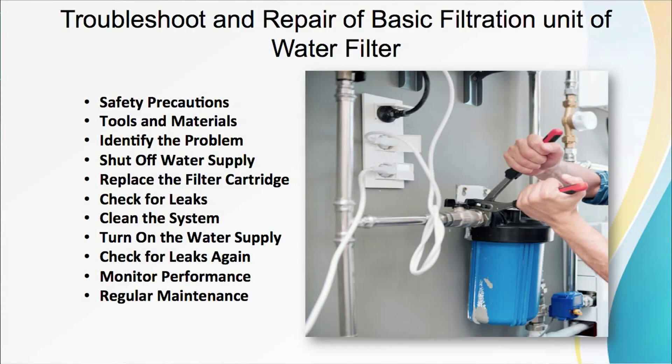The next step is check for leaks. If you are dealing with leaks, inspect the filter housing, connections, and tubing for any visible signs of damage or loose fittings. If you find loose connections, tighten them with your wrench. If there is damage to the housing or tubing, replace the damaged component. Apply Teflon tape or pipe sealant to threaded connections if necessary to prevent leaks.